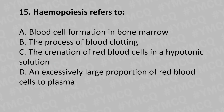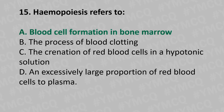Moving to our 15th question: Hemopoiesis refers to? Option A: red blood cell formation in the bone marrow, Option B: the process of blood clotting, Option C: destruction of red blood cells in a hypertonic solution, Option D: an exclusively large proportion of red blood cells to plasma. The answer is Option A: red blood cell formation in the bone marrow.